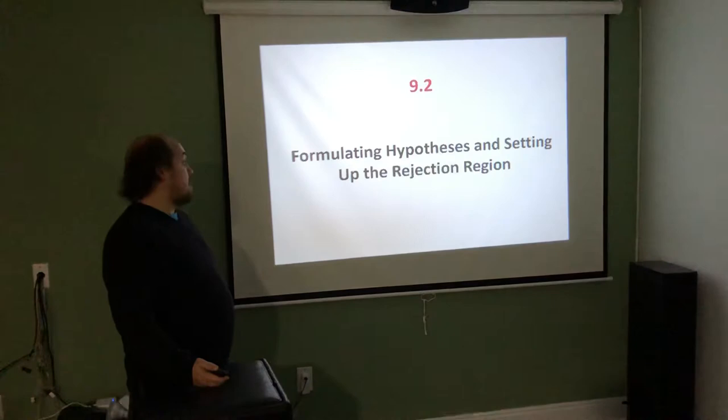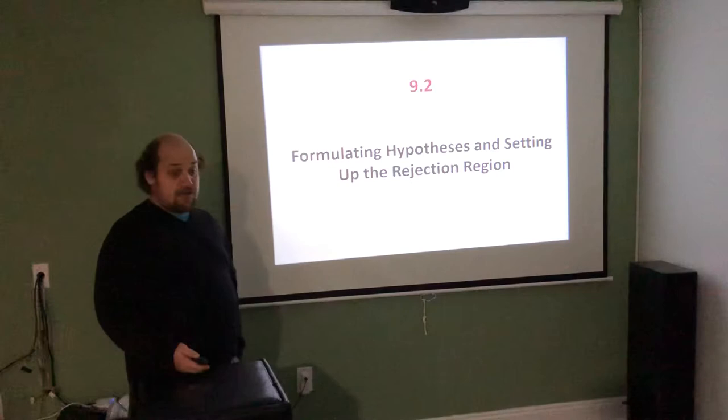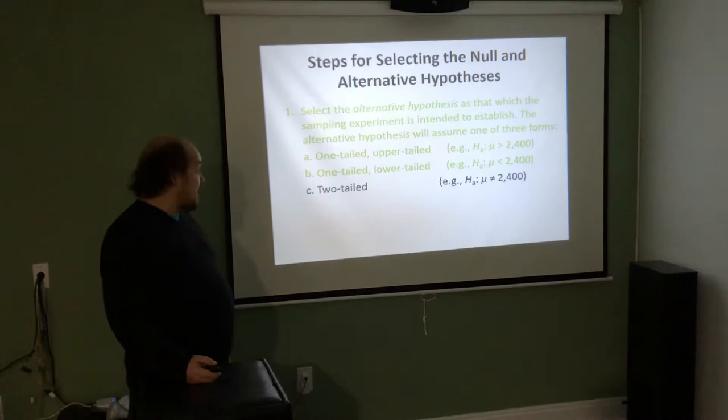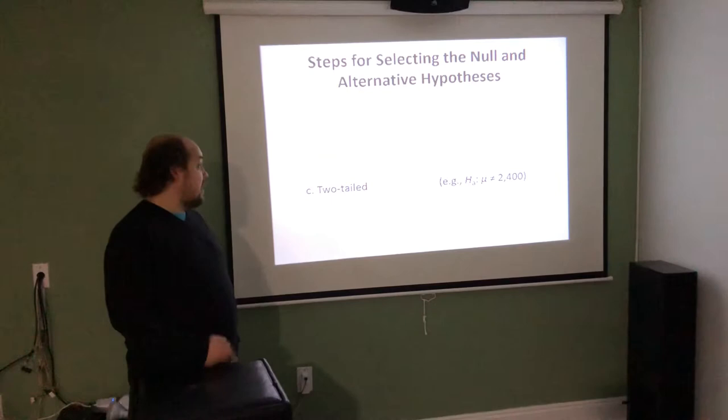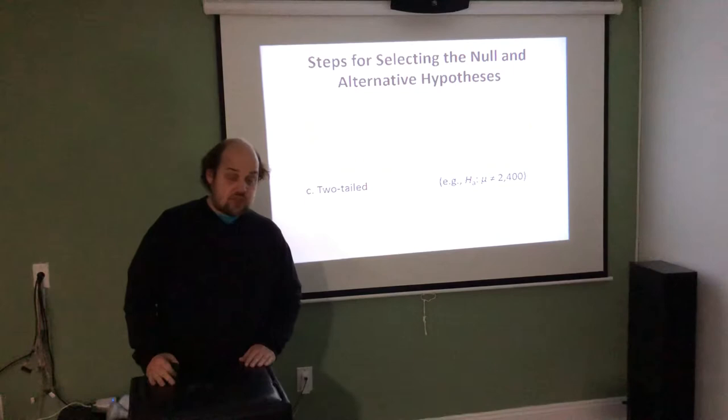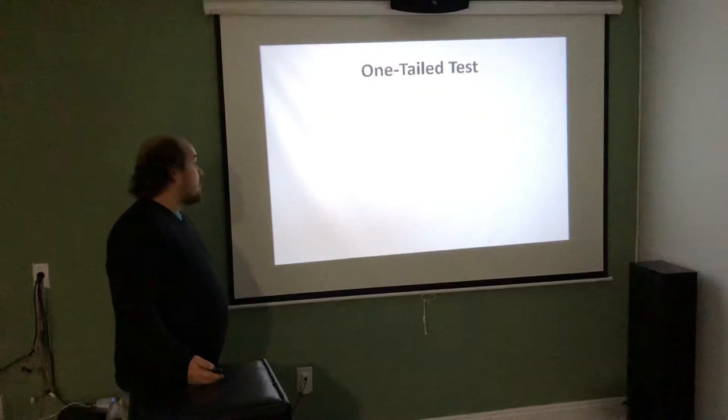Formulating hypotheses and setting up the region of rejection requires more math. Once we've set up the null and alternative, we look to see whether it's a one-tailed upper test (greater than side), a one-tailed lower test (left/lower side), or a two-tailed test where we consider both sides — the extremes on the right and the extremes on the left.